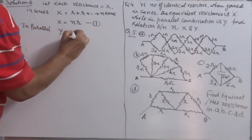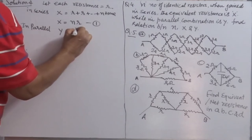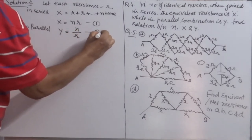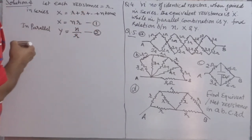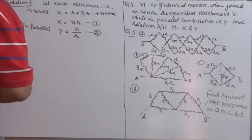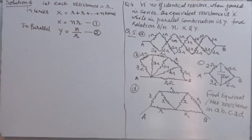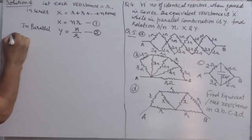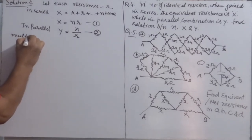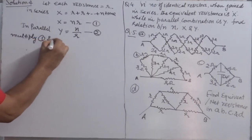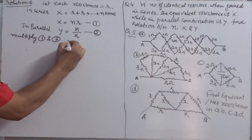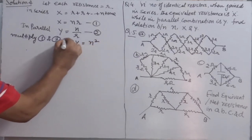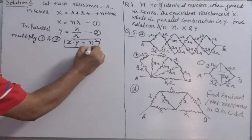So y equals R over n. Now, to find the relation between x and y, the best way is to multiply them. Multiplying x into y gives nR times R over n, which equals R squared — wait, actually x times y equals n squared R squared divided by n, so x times y equals n times R squared. This simplifies to x times y equals n squared. This is the key relation.